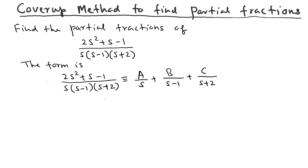Now we use the cover-up method. The argument is: if you want to find A, cover up the corresponding term in the denominator — that means remove s from the left-hand side — then pick the rest and plug in the value that makes that term zero. Plugging in s = 0 makes the s term zero, so that's exactly what we'll plug into the rest of the expression.